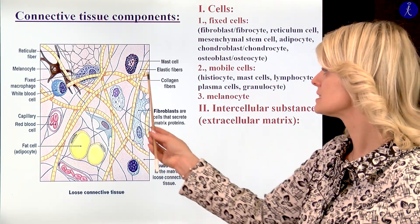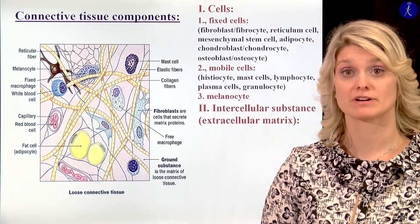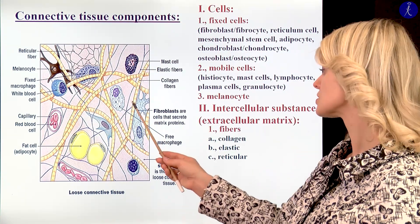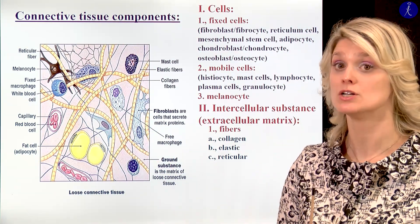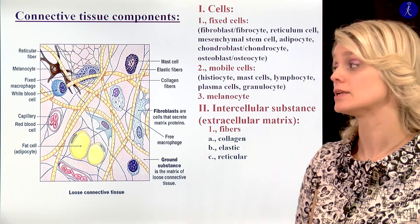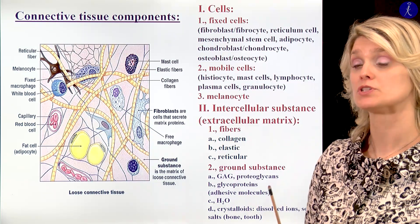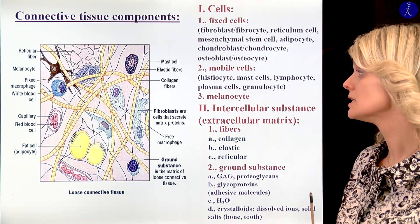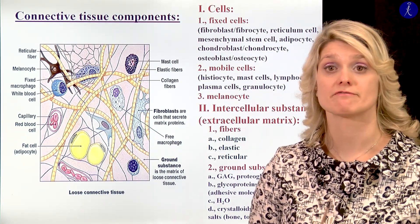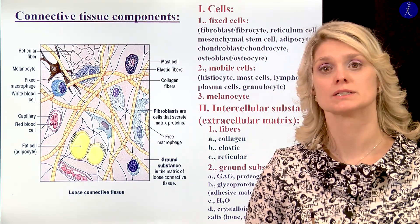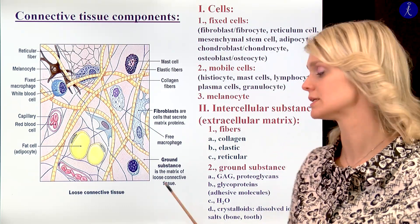If we look at the intercellular substance, there we can find fibers — collagen fibers, elastic fibers, and reticular fibers, which I will show you in the next lecture. Also there we can see a jelly-like material called the amorphous ground substance, which is abundant in glycosaminoglycans and proteoglycans. Here we can find water, for example in the case of blood, or inorganic crystals, for example in bone or teeth.